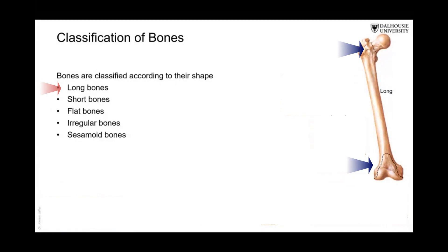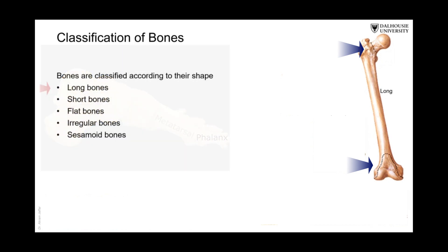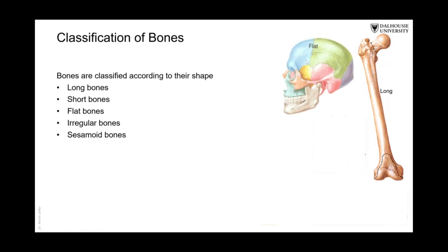So in this definition, if we look at these bones — which are called the metatarsal bones or the phalanges — although they are much shorter than the femur, they are still classified as long bones, because again they have a narrow shaft and two distended extremities. So this is the definition of a long bone.